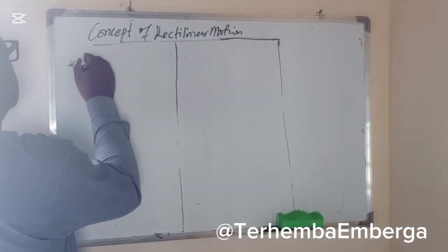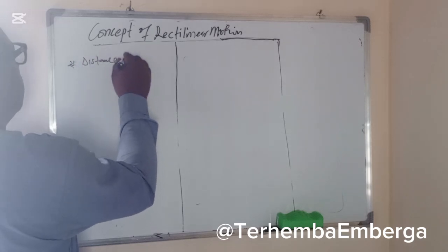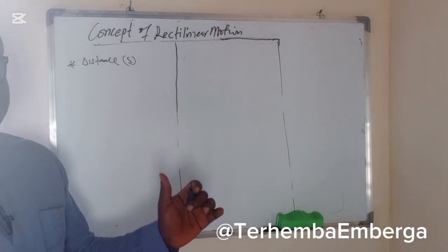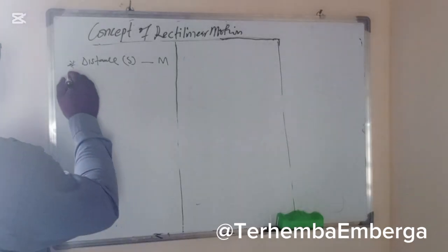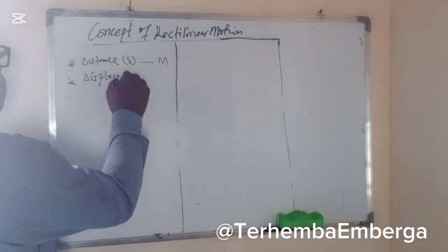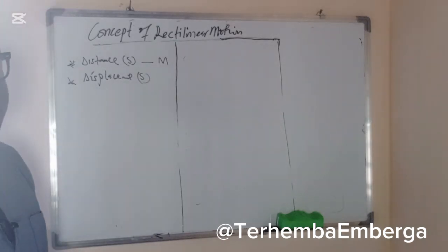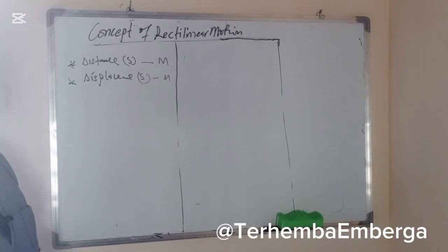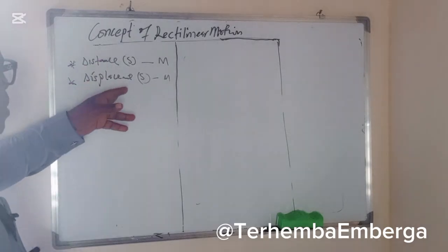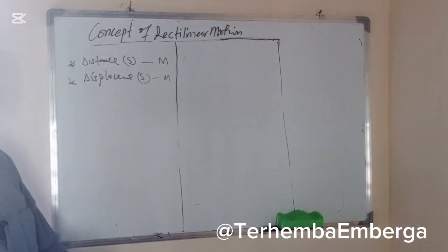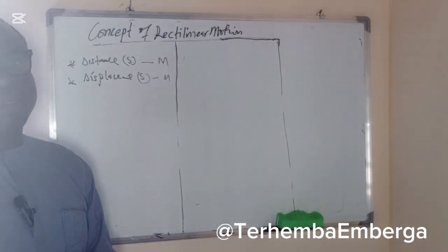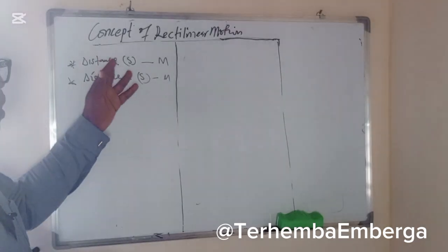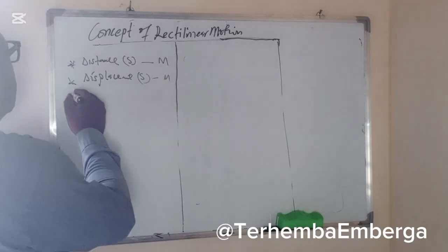First: distance, denoted by s. It's a separation between two points and it's measured in meters. Displacement is also denoted by s and also measured in meters. What is the difference between distance and displacement? Distance is a scalar quantity, while displacement is a distance covered in a specified direction, and therefore it's a vector quantity.